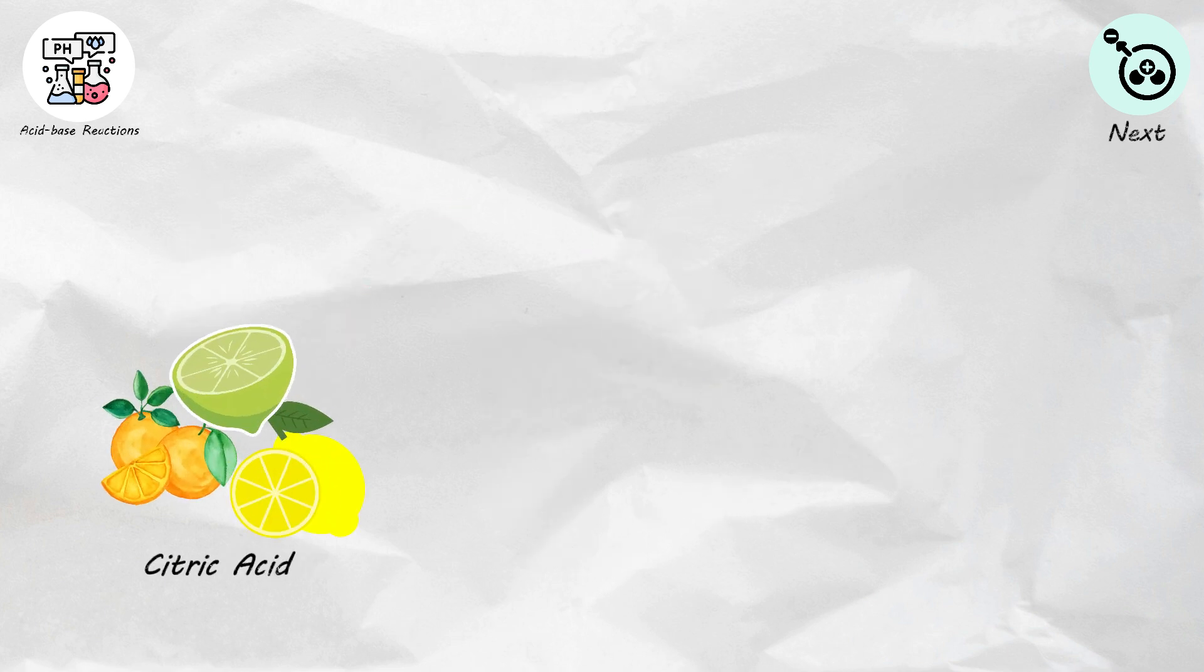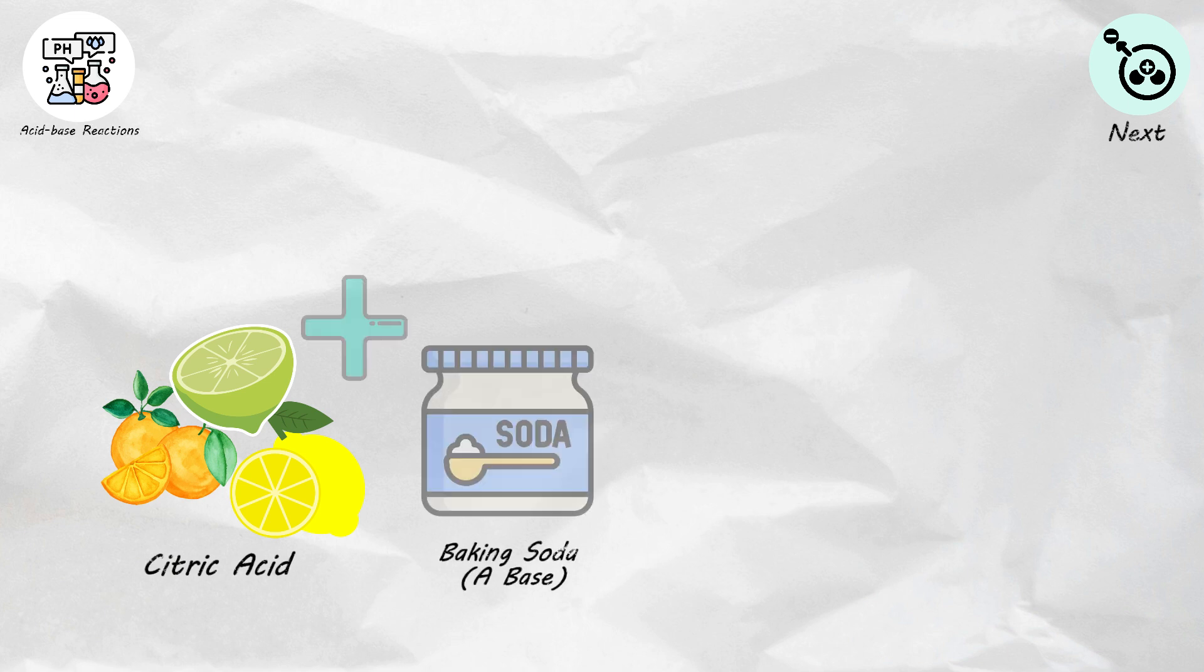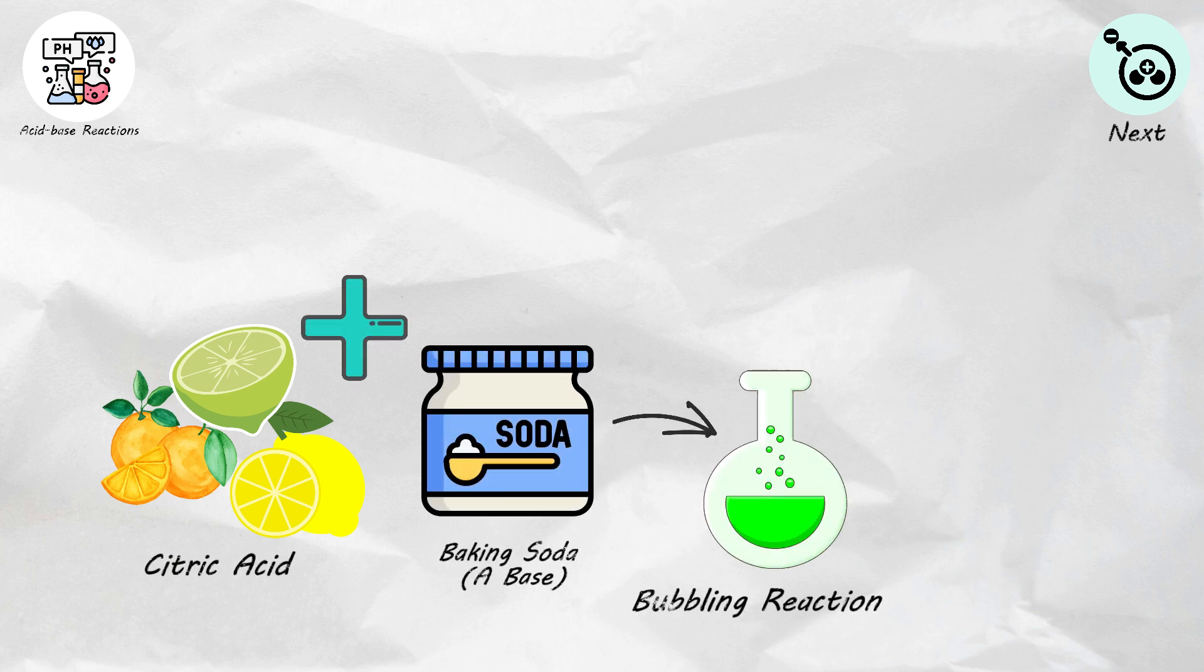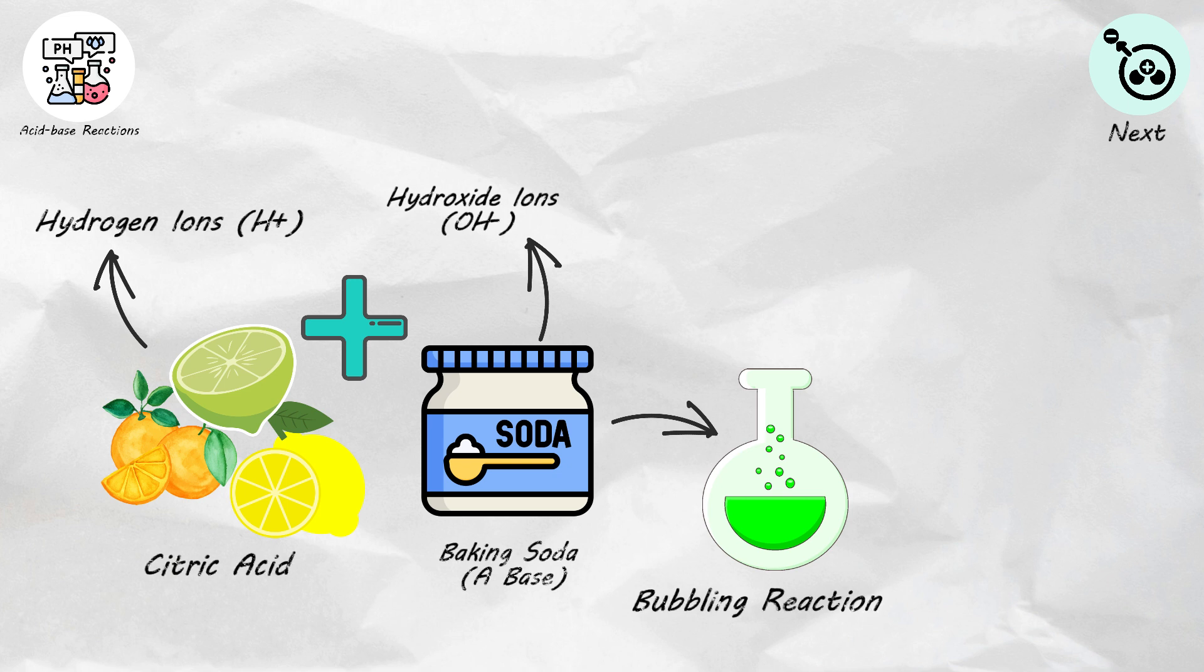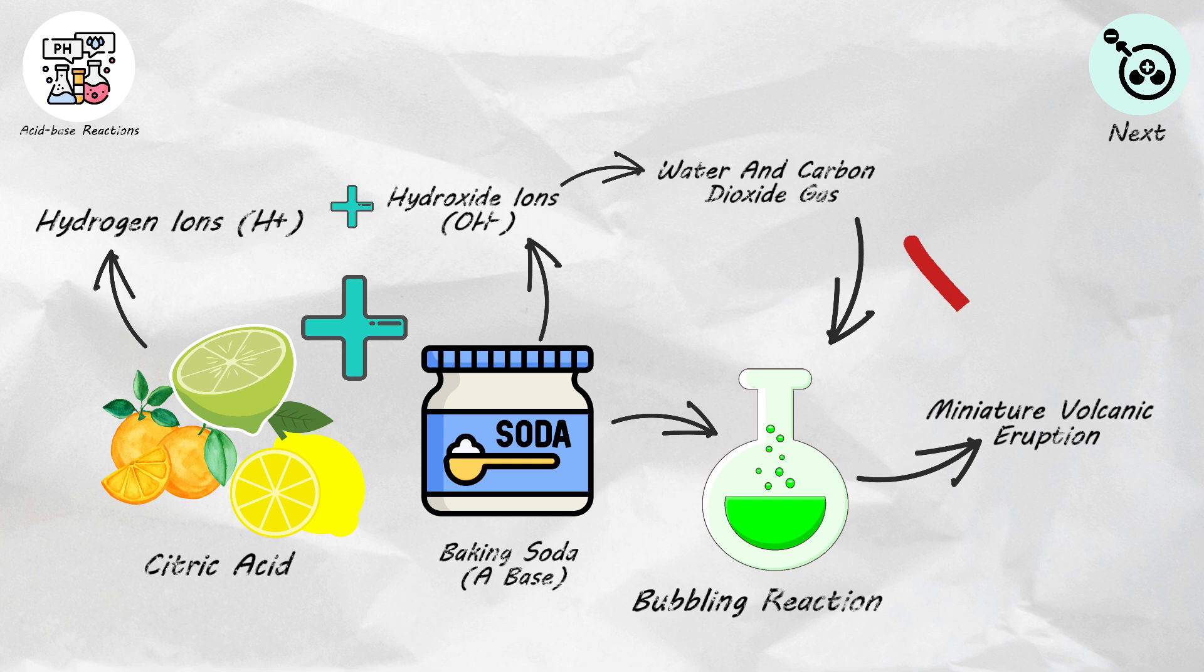When you mix citric acid, found in citrus fruits, with baking soda, a base, you create a fizzing, bubbling reaction. The citric acid donates hydrogen ions, H+, while the baking soda provides hydroxide ions, OH-. These ions combine to form water and carbon dioxide gas, which creates a fizzing effect, resembling a miniature volcanic eruption.